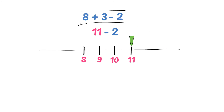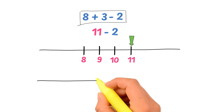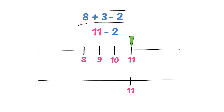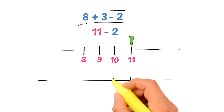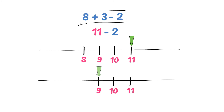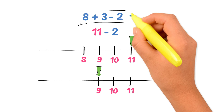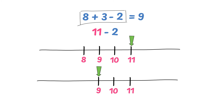Now bring down the negative 2 and we get 11 minus 2. Draw the number line, write here 11, and move 2 spaces to the left: 1 and 2. This is 10 and then 9. Thus, 8 plus 3 minus 2 is equal to 9.